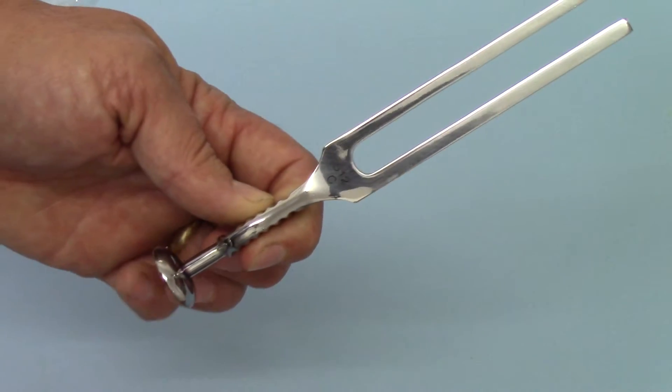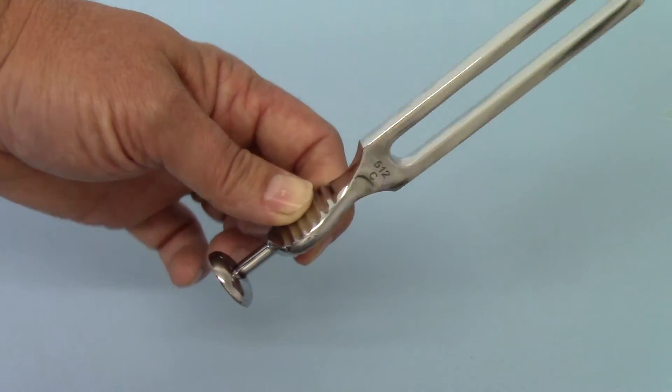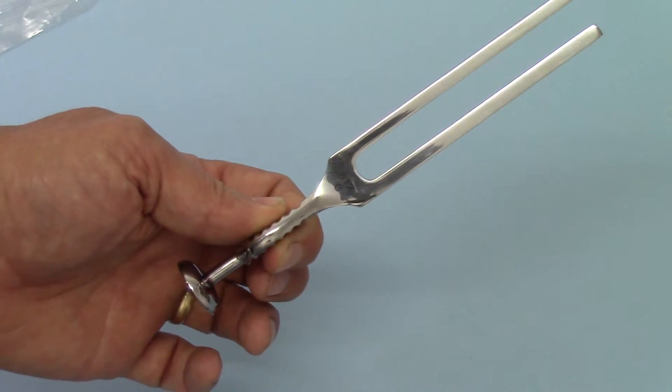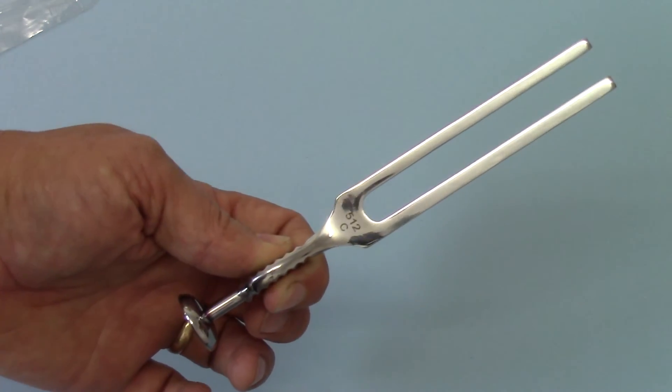So that's the Valumed Gardner Brown 512 Hertz steel tuning fork, available from the Valumed website and also on Amazon and eBay.